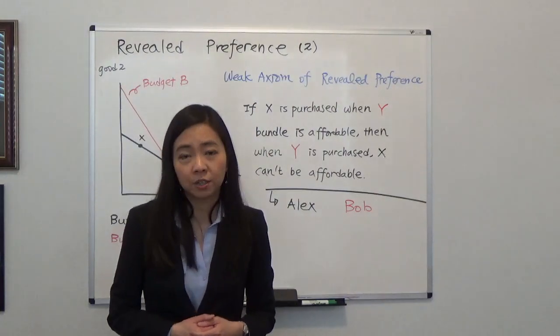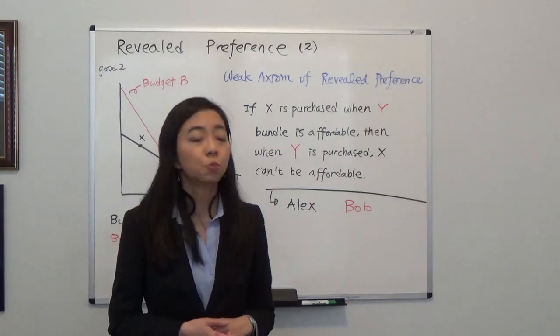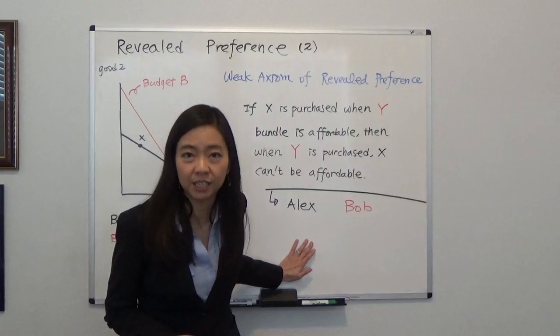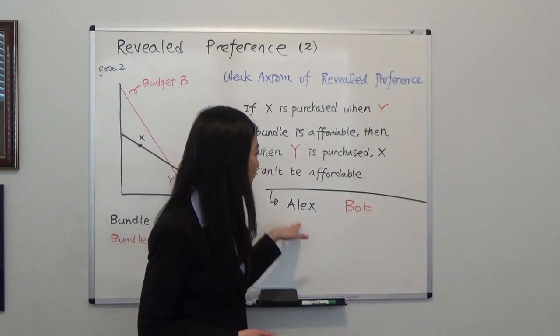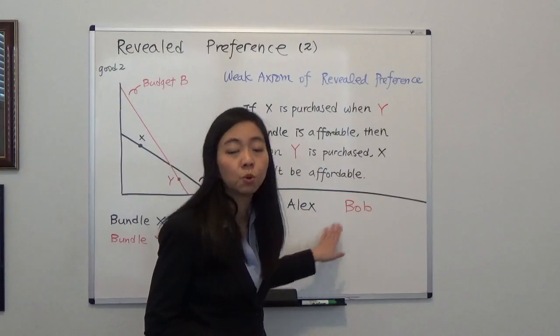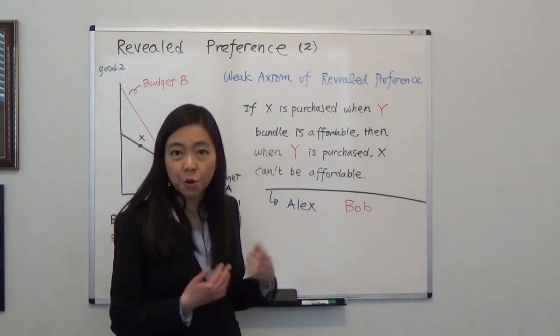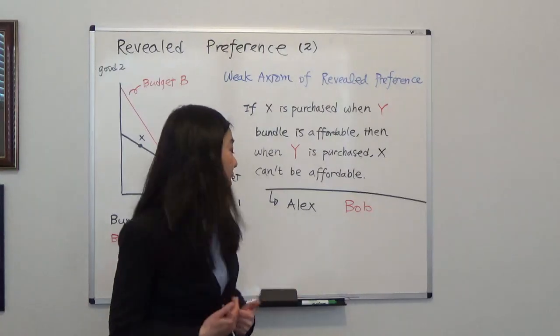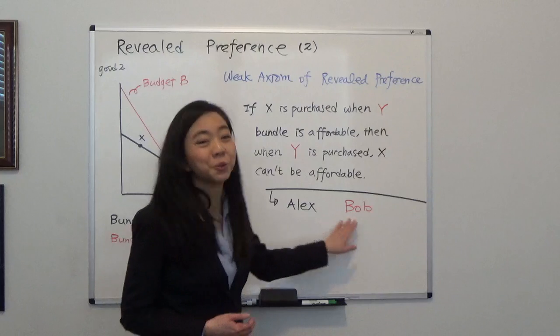Now, I hope you have watched my previous video about revealed preference because today we're going to continue with the analogy that I used last time. So last time we're talking about how Alex and Bob, they both wanted to go out with you to the prom but you could only go out with one of them and you end up going out with Alex. So we know that you prefer Alex to Bob.